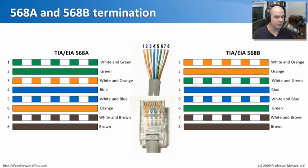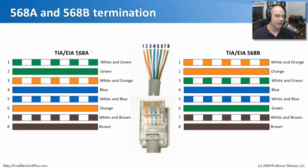The difference between 568A and 568B is the colors being used. If we look at this cable right here, we can see orange on one side, brown on the other side, and green is wrapped around the blues in the middle. So this is wired with a TIA EIA 568B configuration. We want to make sure that on the other side of this cable, the connector is exactly the same with exactly the same colors.